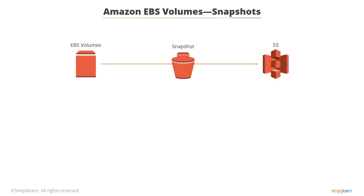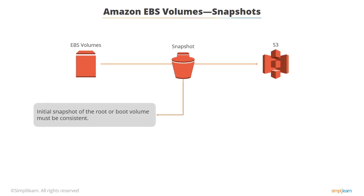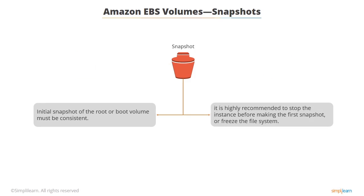You can back up the data on your EBS volumes to Amazon S3 by taking point-in-time snapshots. The initial snapshot of the root or boot volume must be consistent, so it is highly recommended to stop the instance before making the first snapshot or freeze the file system.